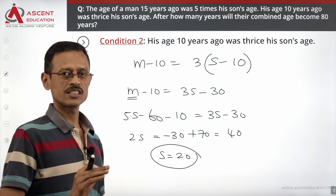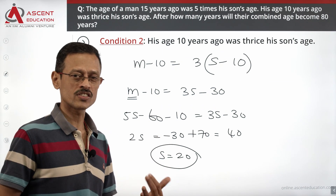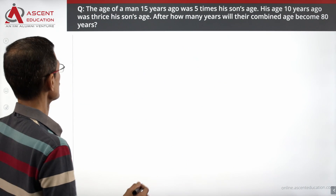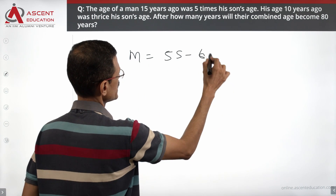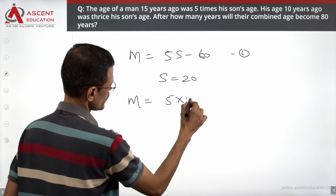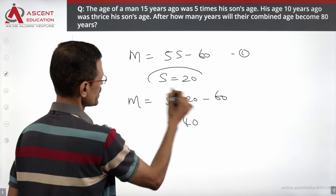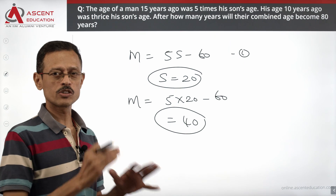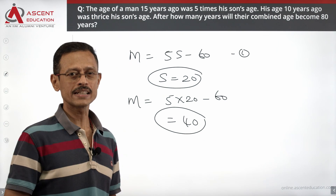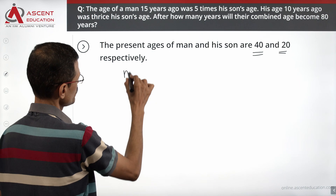Now we find the answer for m and s. We know m equals 5s minus 60. Substituting s equals 20: m equals 5 times 20 minus 60, which equals 100 minus 60, equals 40. So the present age of the man is 40 and the present age of the son is 20.